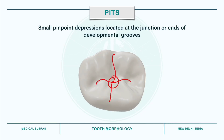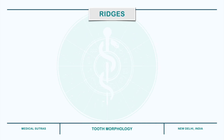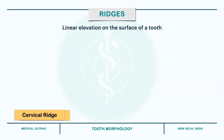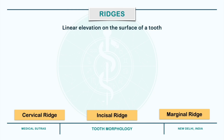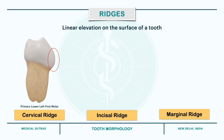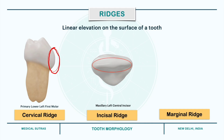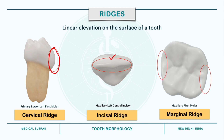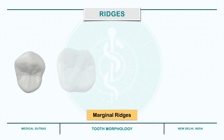Now moving on to elevations. A ridge is any linear elevation on the surface of a tooth and it is named according to its location. For example, we have cervical ridge, incisal ridge and marginal ridge. The cervical ridges are seen on the cervical third of the buccal surface of primary teeth — for example, here on the primary lower first molar. The incisal ridges are found on the incisal edge of incisors. Marginal ridges can be found on both anterior and posterior teeth. These are rounded borders of enamel that form the mesial and distal margins of the occlusal surfaces of premolars and molars.